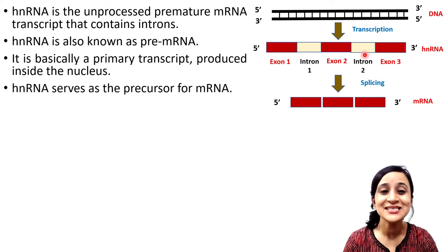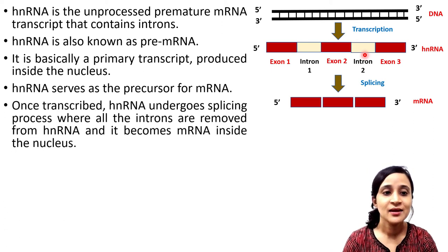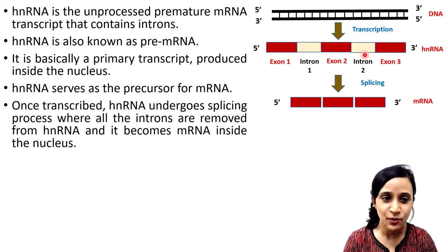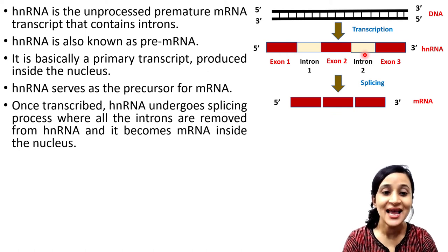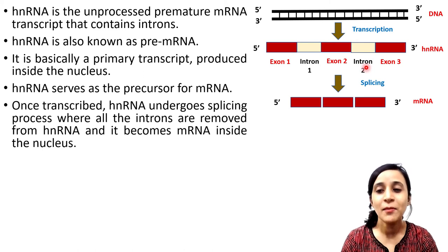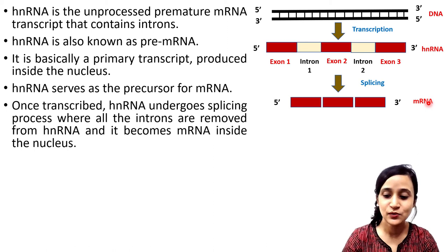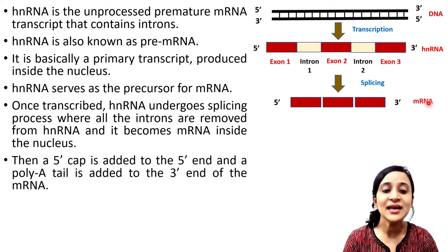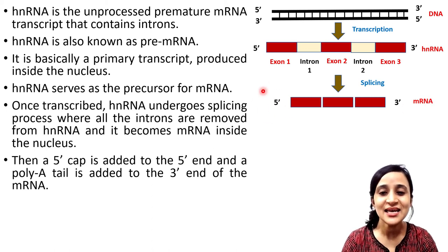Once transcribed, hnRNA undergoes a splicing process where all the introns are removed, and it becomes mRNA inside the nucleus. After splicing, a 5' cap is added to the 5' end of the mRNA.